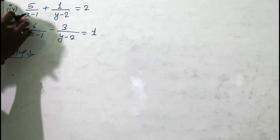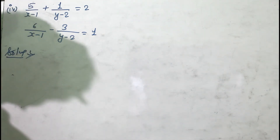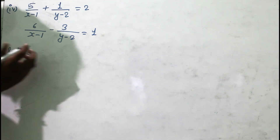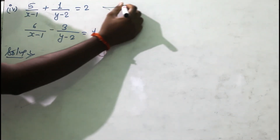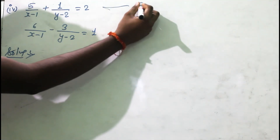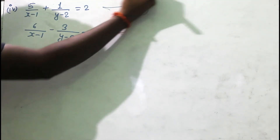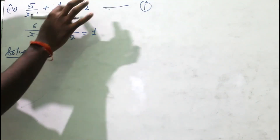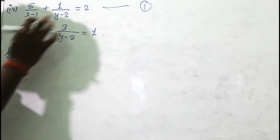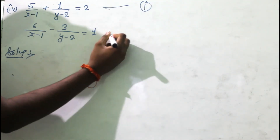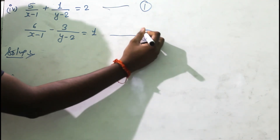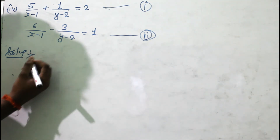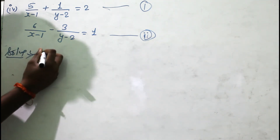Let 1/(x-1) = p and 1/(y-2) = q. The first thing we will do is write the system of linear equations. Here is our equation number one and here is the other equation. So let's solve it.